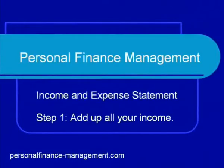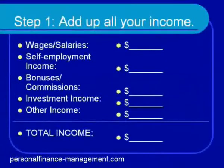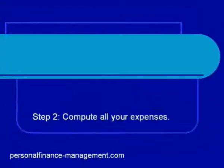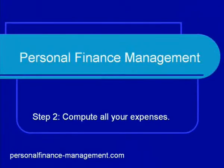The first step is to add up all your income. Aside from your salary, you might have other sources of income. Write down the amounts you receive next to the category they fall under. Add them all up to get your total income for the month.